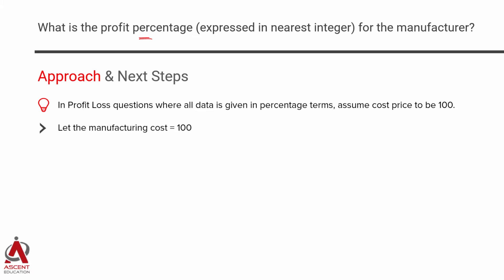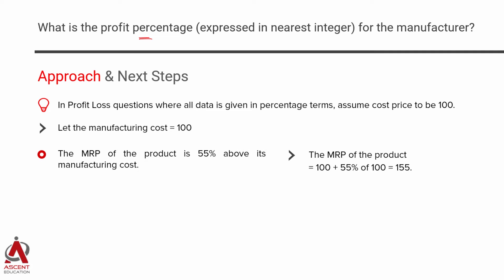In terms of this 100, we are going to express all other things. The MRP of the product is 55% above the manufacturing cost, so it's going to be 100 plus 55% of 100. Therefore, the MRP of the product is equal to 155.